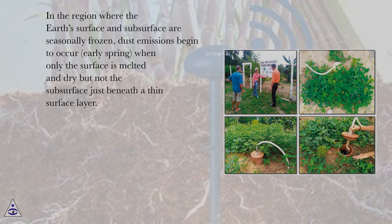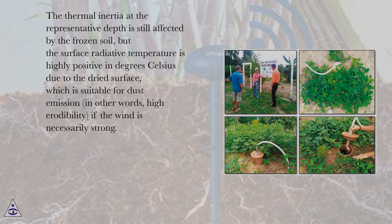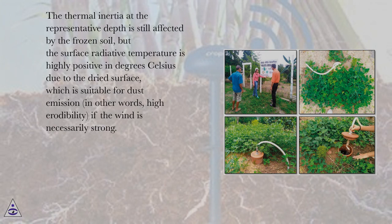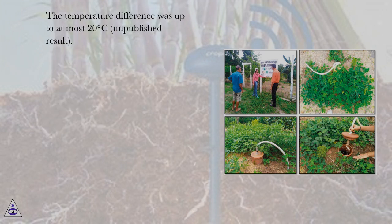Considering that it should be difficult to obtain the relationship between thermal inertia and matrix potential, practical relationships between thermal inertia-derived soil moisture and threshold wind speed with regard to individual soil types are required. In regions where the Earth's surface and subsurface are seasonally frozen, dust emissions begin to occur in early spring when only the surface is melted and dry but not the subsurface just beneath a thin surface layer. The thermal inertia at the representative depth is still affected by the frozen soil, but the surface radiative temperature is highly positive in degrees Celsius due to the dried surface, which is suitable for dust emission — in other words, high erodibility, if the wind is necessarily strong.